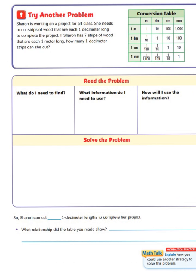Now, let's try another problem model on this. Let's begin by reading the problem. So, it starts with, Sharon is working on a project for art class. She needs to cut strips of wood that are each one decimeter long to complete the project. If Sharon has seven strips of wood that are each one meter long, how many one decimeter strips can she cut?